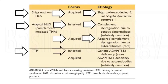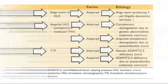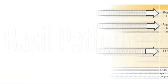TTP, that is thrombotic thrombocytopenic purpura, is of two types: inherited and acquired. Inherited TTP is rare and due to inherited deficiency of ADAMTS13 protein. Acquired TTP is relatively common and due to ADAMTS13 deficiency caused by autoantibodies.